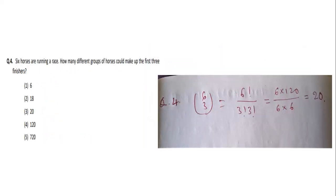Question four is from permutation and combination: six horses are running a race — how many different groups of horses could make up the first three finishers? Six horses are given and we have to choose three finishers, so it is simply a combination of choosing 3 horses out of 6, that is 6C3.